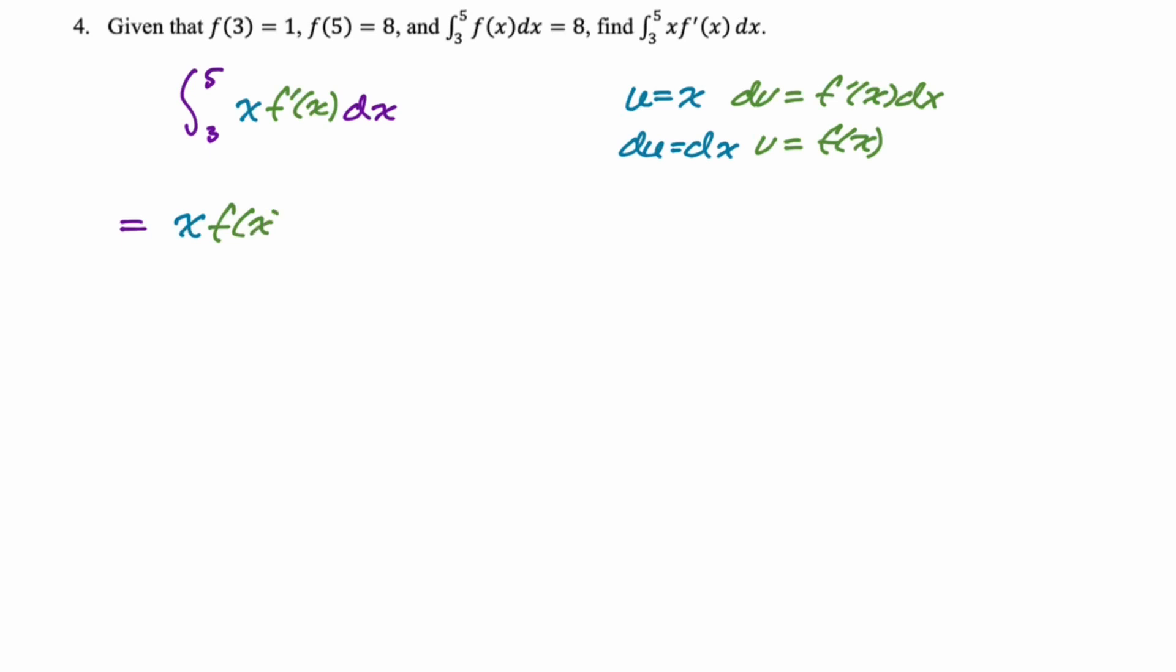And then minus the integral of v du, which is just f of x dx from 3 to 5. Now that would be a problem if we didn't know what it was, but we're just told what that is, so we don't have to worry about it. So here, 5 f of 5 minus 3 f of 3.